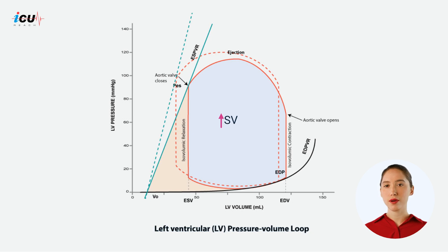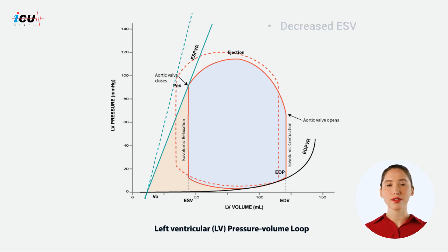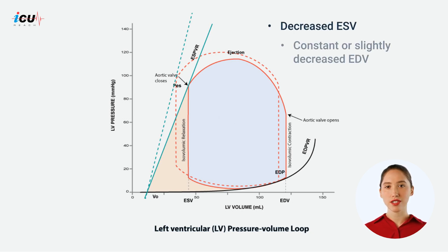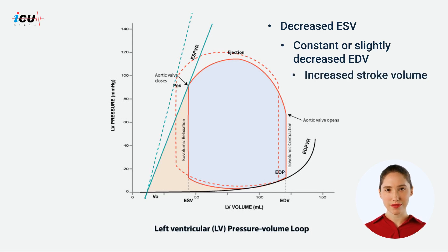So, in summary, increased contractility leads to decreased end systolic volume, constant or slightly decreased end diastolic volume, and increased stroke volume.